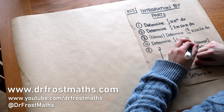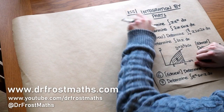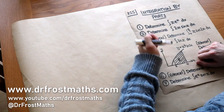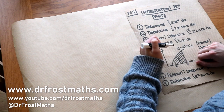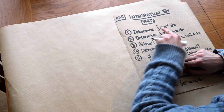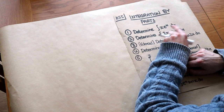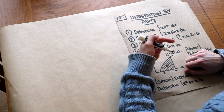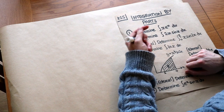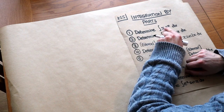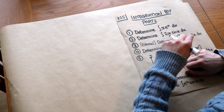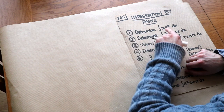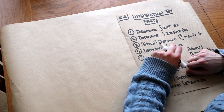Hello and welcome to this Dr. Roster-Mouse video on Key Stage 5 Integration by Parts. We use this method of integration when we have the integral of a product of two expressions. It's kind of like the opposite of the product rule — we'd use the product rule in differentiation for a product of two things, whereas we use integration by parts for the integration of the product of two expressions.